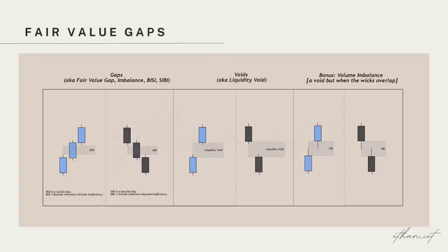Next, we have liquidity voids, which are literal gaps between candles where their wicks do not meet each other. The last inefficiency I look for is volume imbalances — these are also literal gaps between candles, but their wicks are meeting in this case. If you want a more in-depth explanation of these gaps, I highly encourage you to watch the Unicorn model entry lecture as I cover it in more depth there.